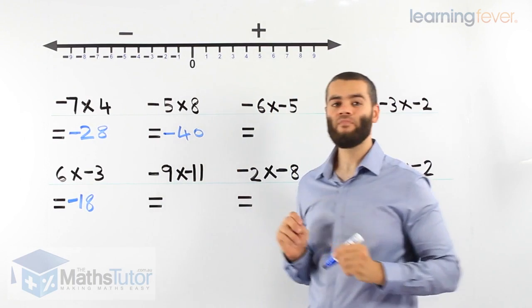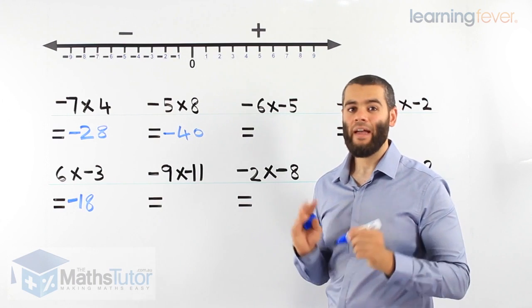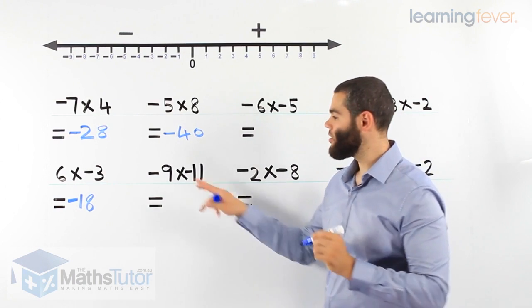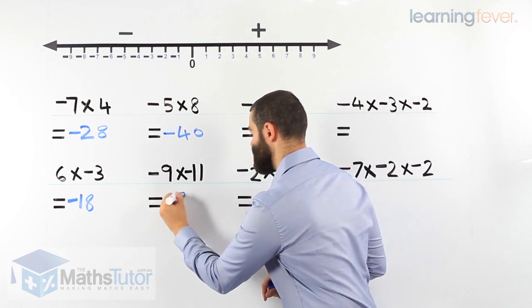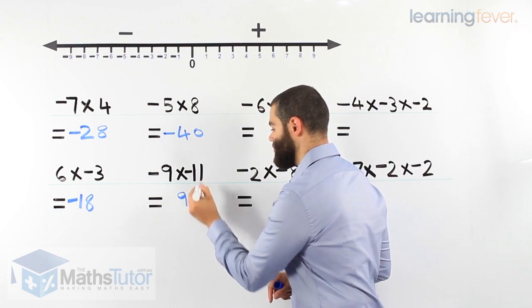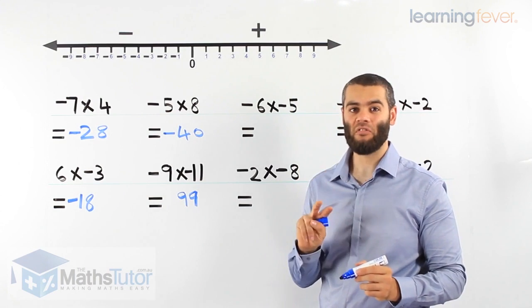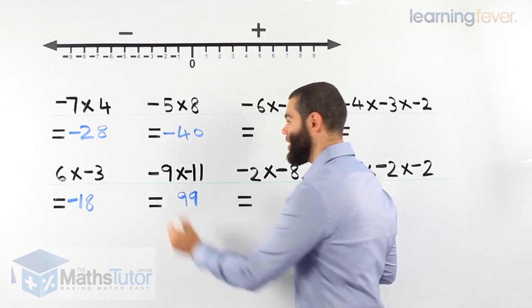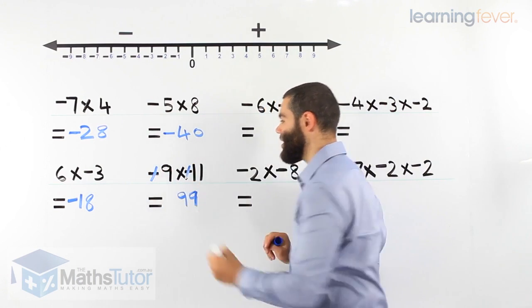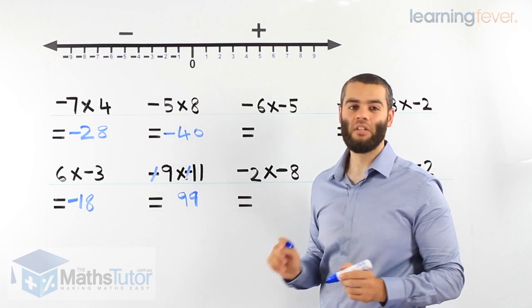In this here, we have negative 9 times negative 11. Again, we do the multiplication. 9 times 11, 99. However, we notice we don't have one negative, we have two negatives. Guess what happens? The two negatives, they cancel each other out. They go to the movies. They're gone. So our answer is positive 99.